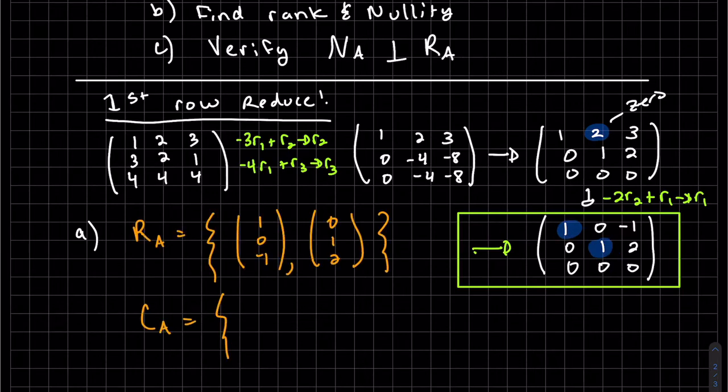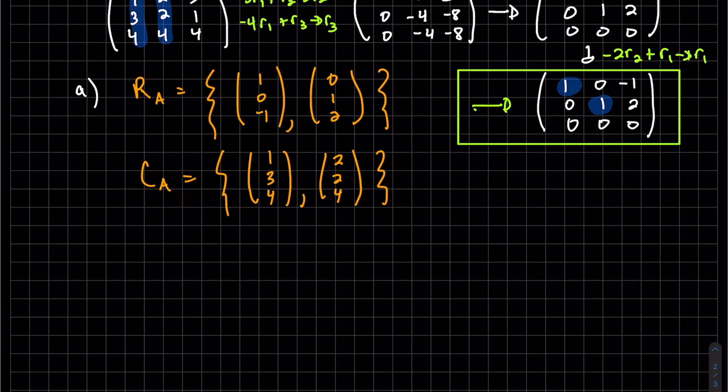So we use the corresponding columns, first two. We have to augment that row reduced.